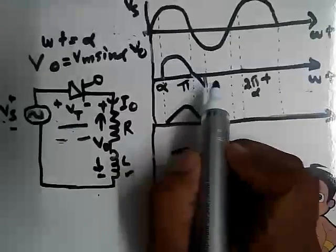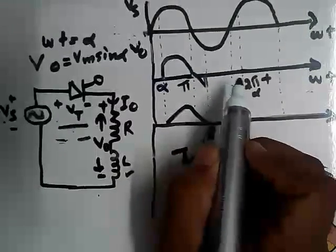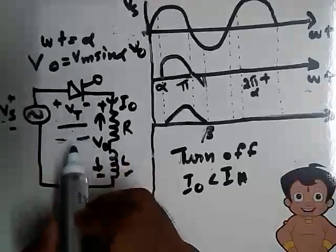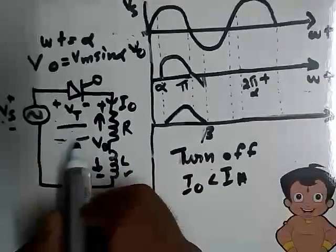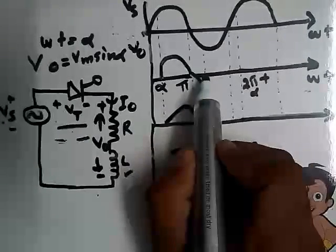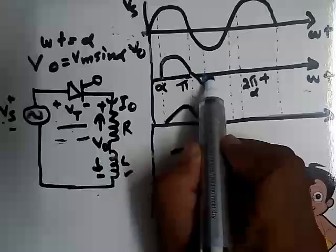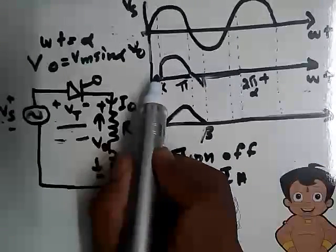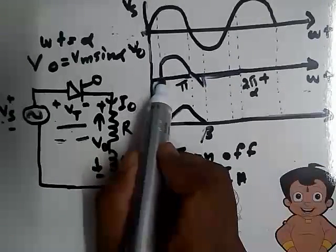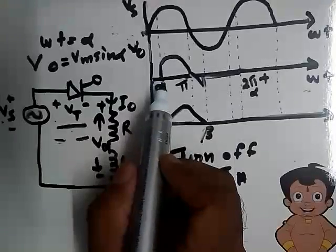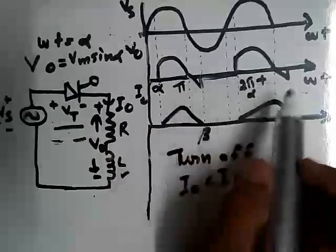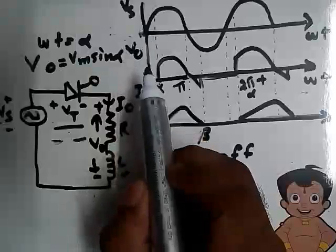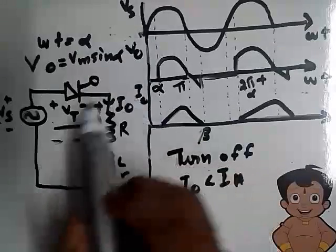From β to the next triggering — that is, from β to 2π + α — this thyristor acts as an open circuit, so the output voltage becomes zero from β to the next 2π + α point. This would also be zero. So like this, every cycle is repeated, and we have obtained Vs, output voltage, and I0.